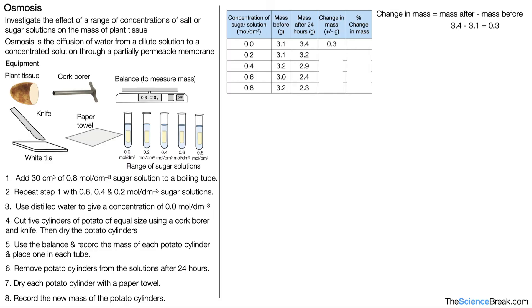To calculate the percentage change in mass, we do the change in mass divided by the mass before 24 hours, and multiply by 100 to get the percentage. For our first example, it's 0.3 divided by 3.1 times 100, which gives us 9.67, or 9.7% if we round to one decimal place. We can add that to our table.